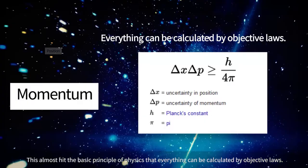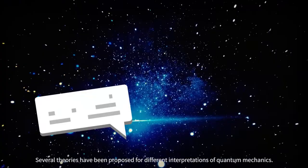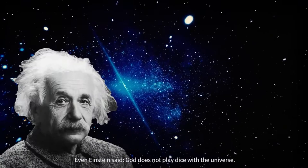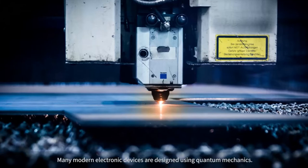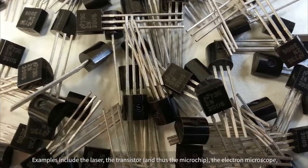This almost hits the basic principle of physics that everything can be calculated by objective laws. Several theories have been proposed for different interpretations of quantum mechanics; however, there is no consensus regarding any of these theories. Even Einstein said, 'God does not play dice with the universe.'